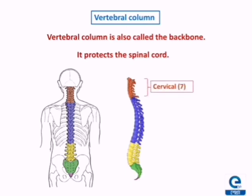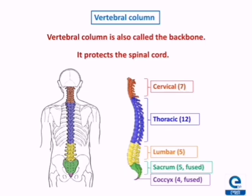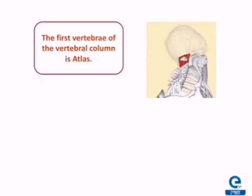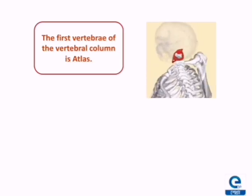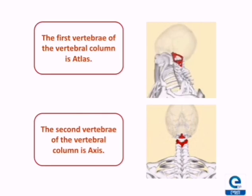The first 7 vertebrae are known as cervical. Then come the thoracic vertebrae, of which there are about 12. The next 5 are known as lumbar. The next 5 are totally fused together and are named the sacrum. The last 4 are totally fused together and are named the coccyx. The first vertebra of the vertebral column is called the atlas, and the second is known as the axis.